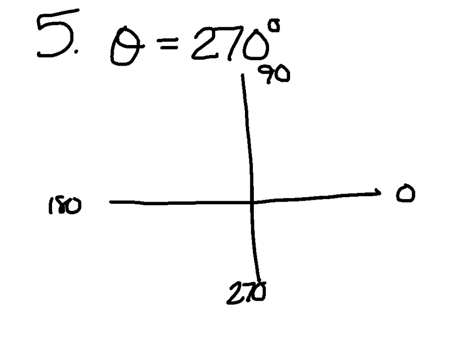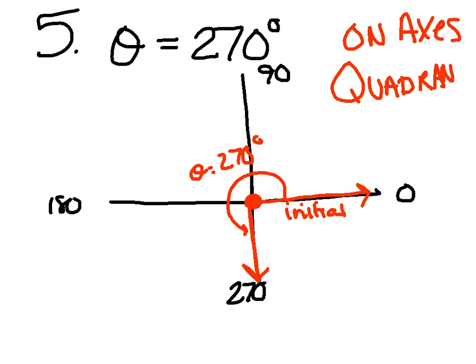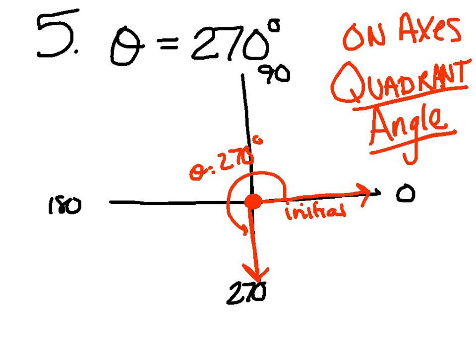What if theta equals exactly 270 degrees? Vertex and initial side in place, going 270 degrees counterclockwise lands you right on the y-axis. Notice you can't actually say you're in a quadrant, and that's okay. When you're on the axis like this, these are called quadrantal angles — the angle you make is not actually in a quadrant, it's on one of the axes.